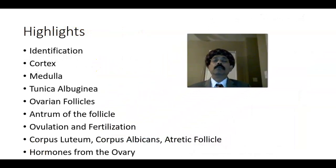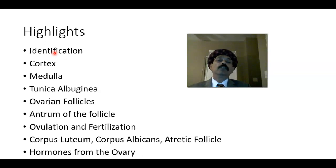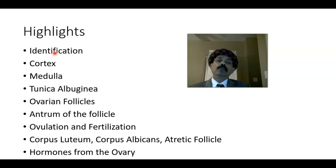So what are the highlights of today's lecture? Identification: we have cortex and medulla, we have tunica albuginea, and in the cortex we have the follicles — primordial follicle, primary follicle, secondary follicle or antral follicle, and we have the mature Graafian follicle. We have ovulation. At ovulation, the ovum comes out in the second meiotic division in metaphase. If it is fertilized by a sperm, then the second meiotic division will be completed; otherwise it will not be completed. In the primordial follicle, cells are in meiosis in prophase.